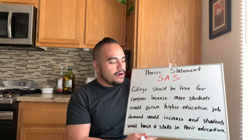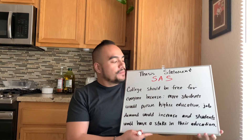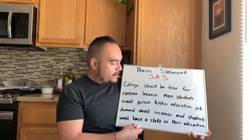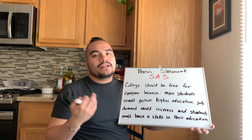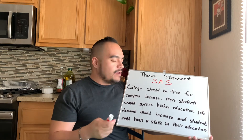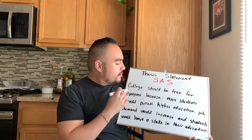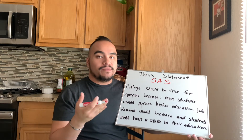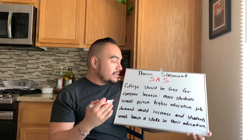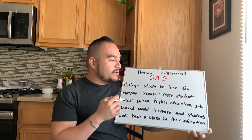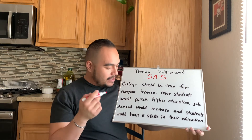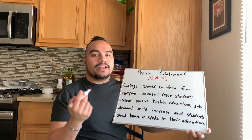You can't make any particular argument without supporting it. So I made out this thesis statement right here and we're going to break it down into its main three parts in SAS format. We'll read it first and then mark it up as we go. It says: 'College should be free for everyone because more students would pursue higher education, job demand would increase, and students would have a stake in their education.'